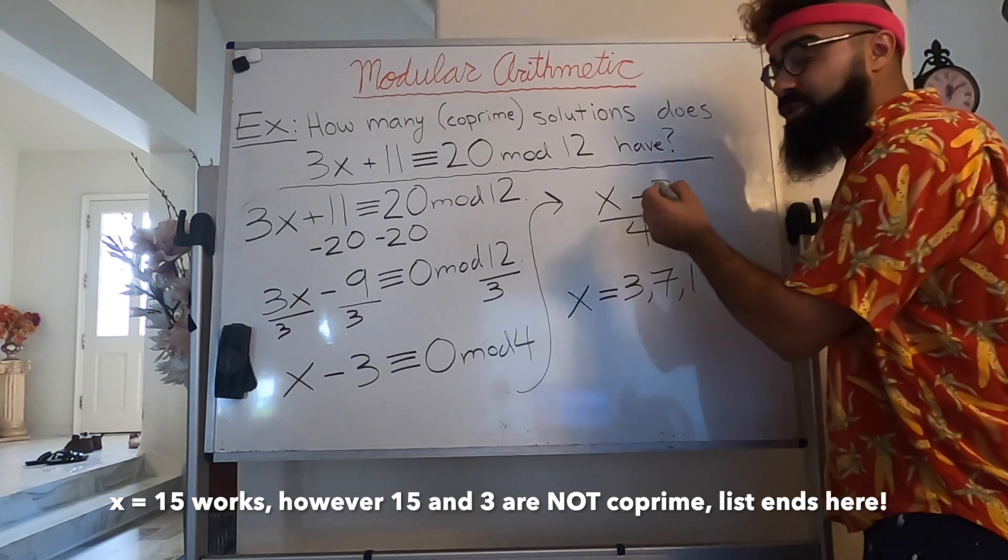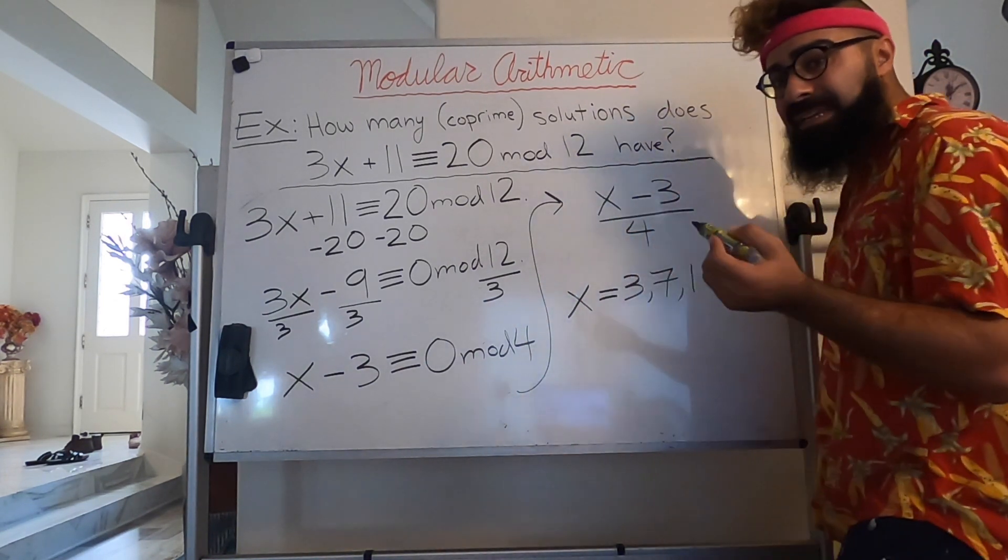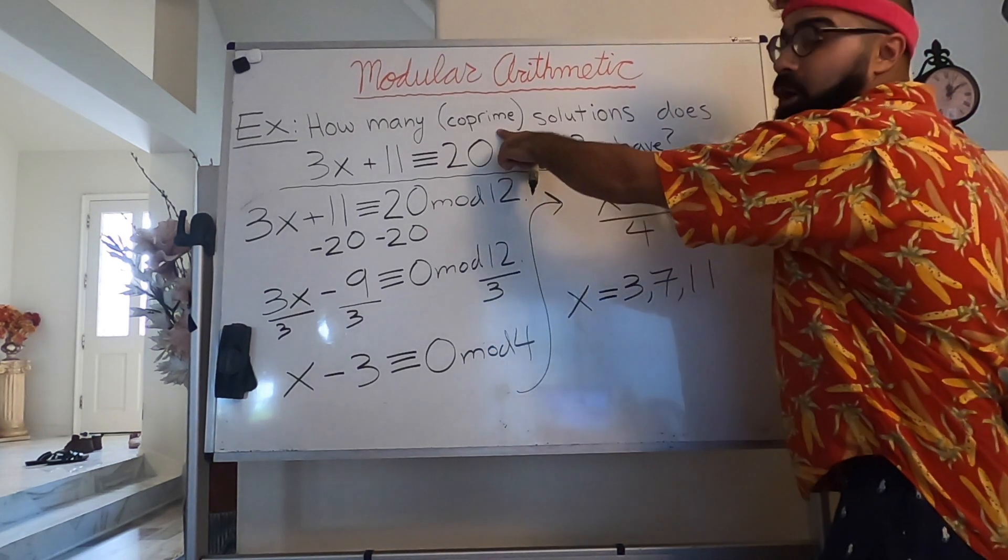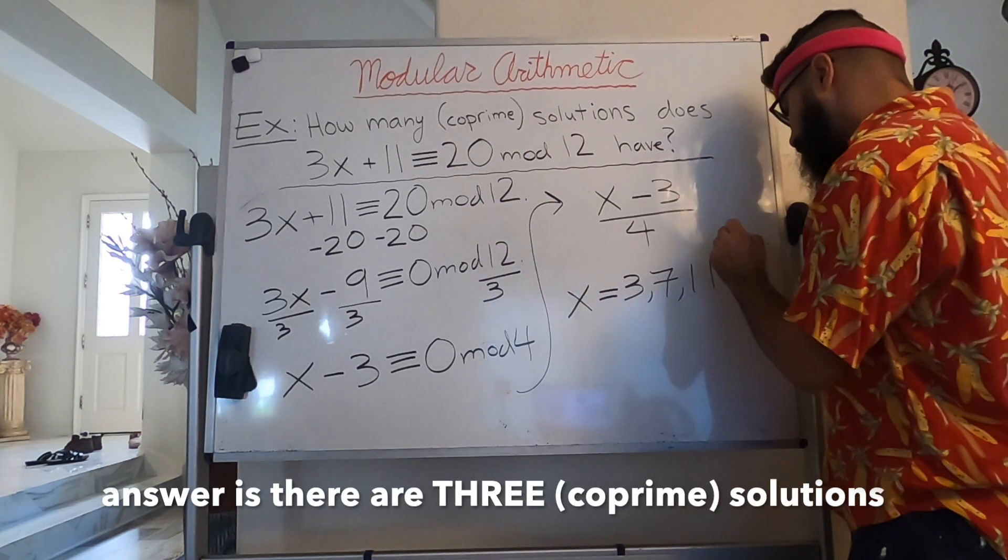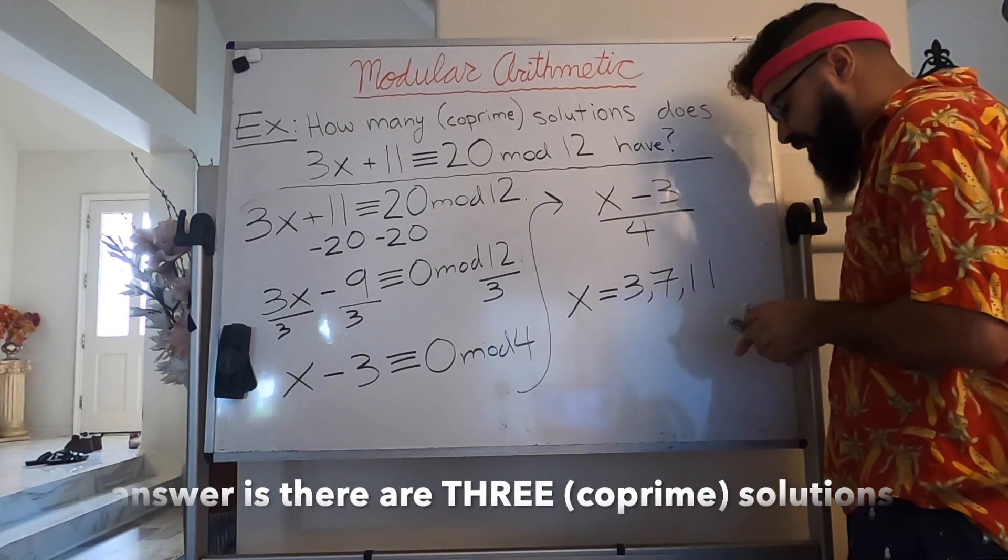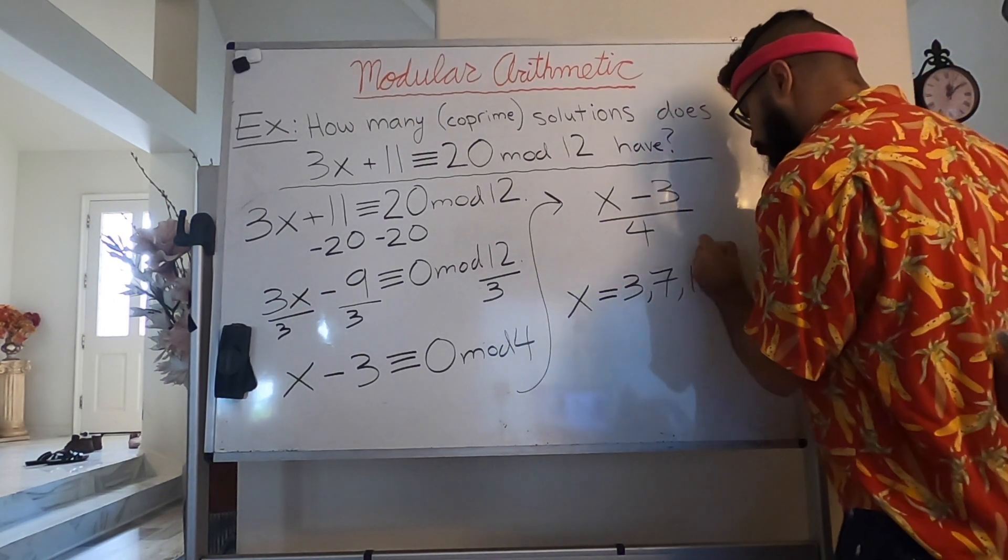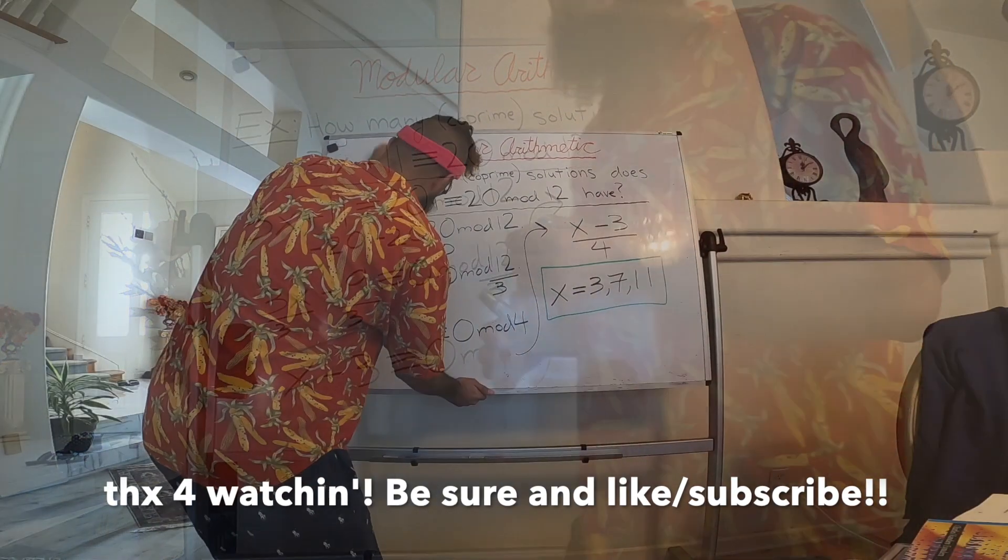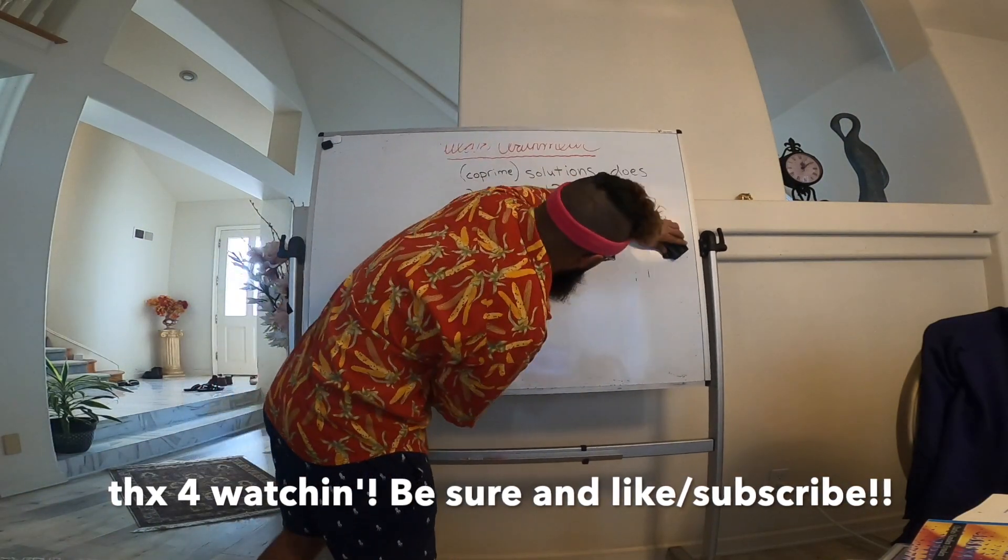15 take away 3 is 12, divided by 4 is still an integer. However, 15 and 3 are not co-prime. So that's all. The only answers for x that are co-prime to one another are x equals 3, 7, and 11 for the given congruence.